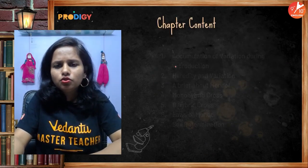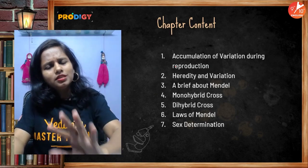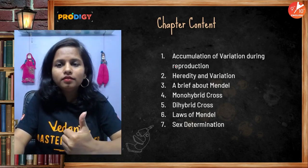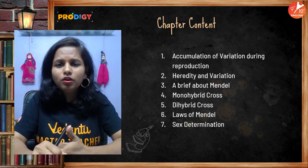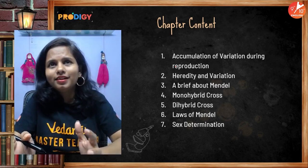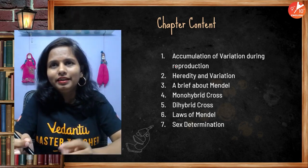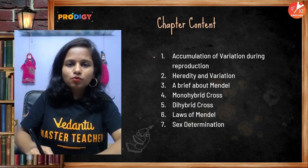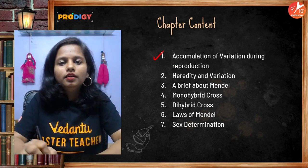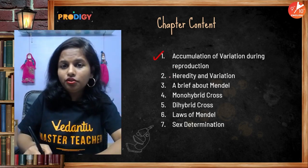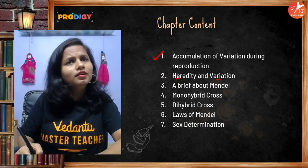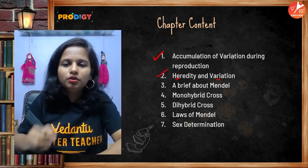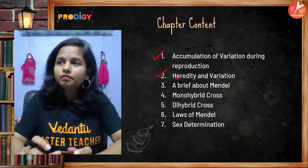The chapter contains seven topics precisely: what is heredity, what is variation, how variations get accumulated, and how evolution works. Then we cover the definitions of heredity, variation, and evolution — though evolution is now being deleted from the syllabus.